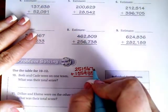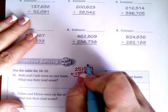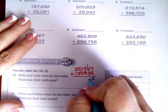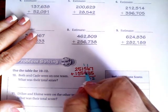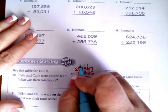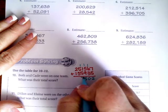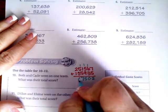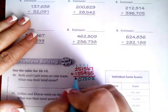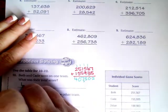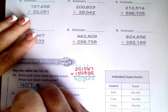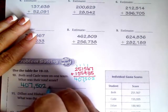We want to know what their total score was. Total means we are adding. So seven plus five is 12, carry our one. One plus six is seven, plus three is 10, carry our one. One plus five is nine, plus 10... wait, plus nine is 10, carry our one. One plus one is two, plus five is seven. Five plus five is 10. One plus two is three, plus one more is four. So 407,502 points.